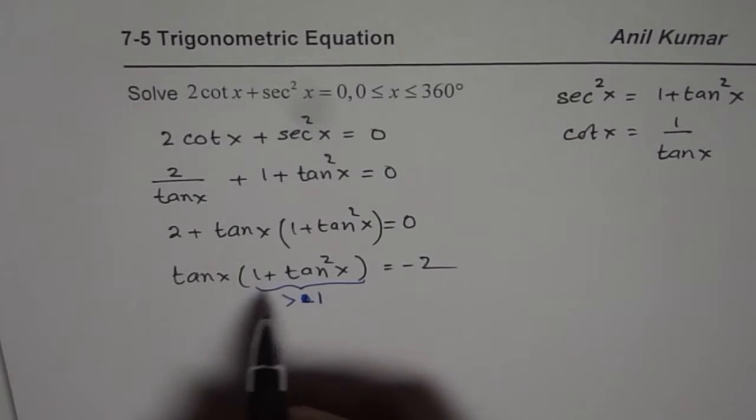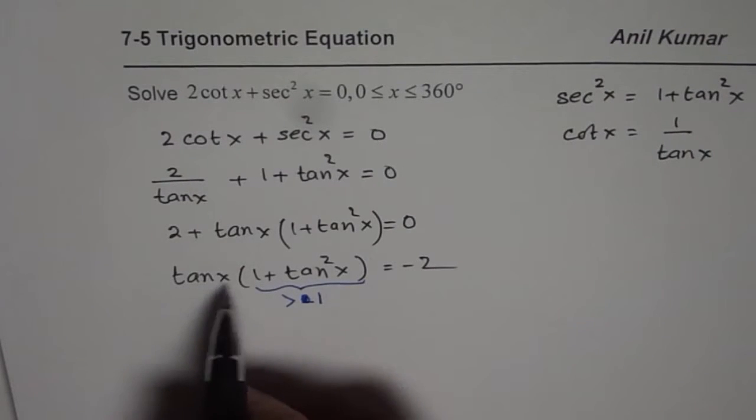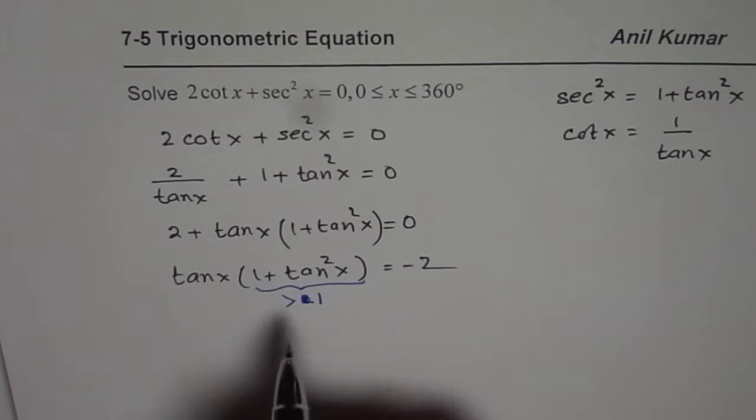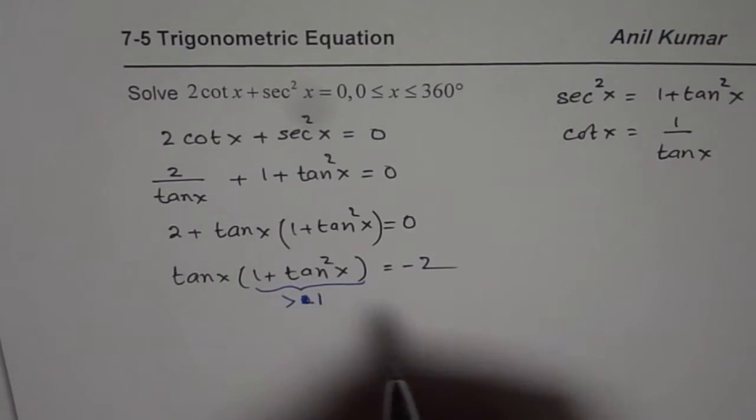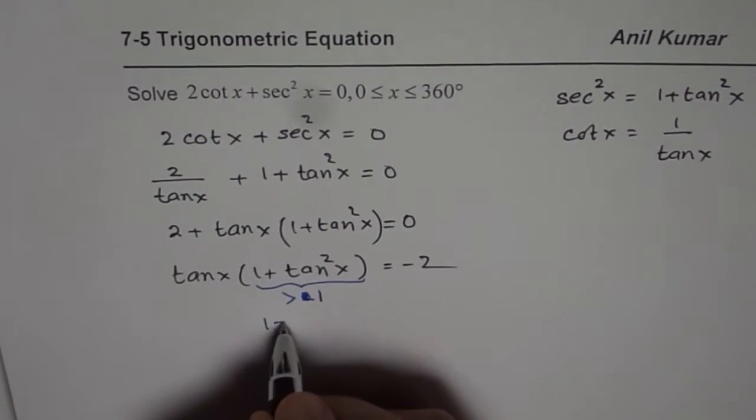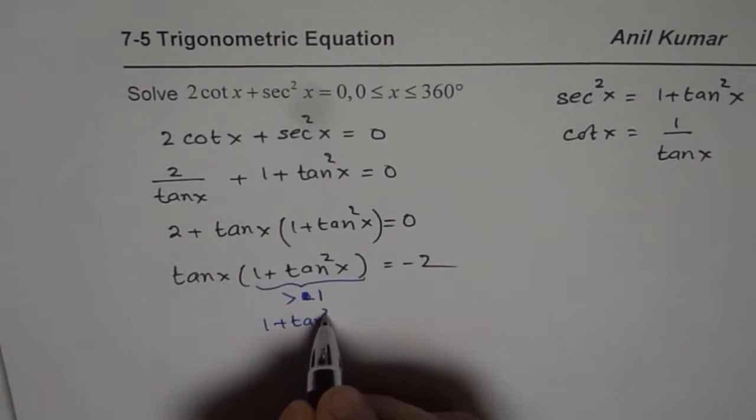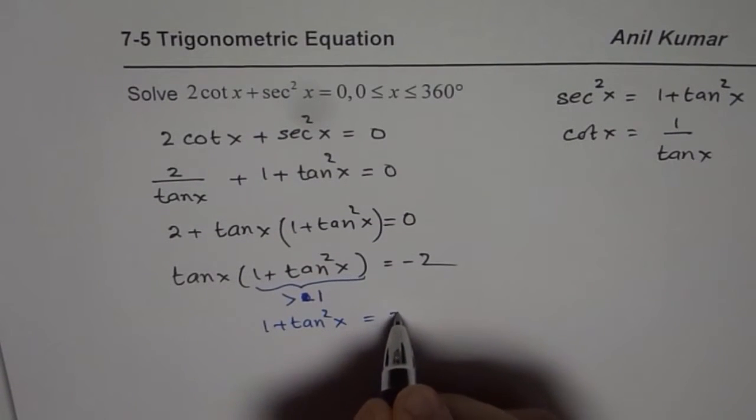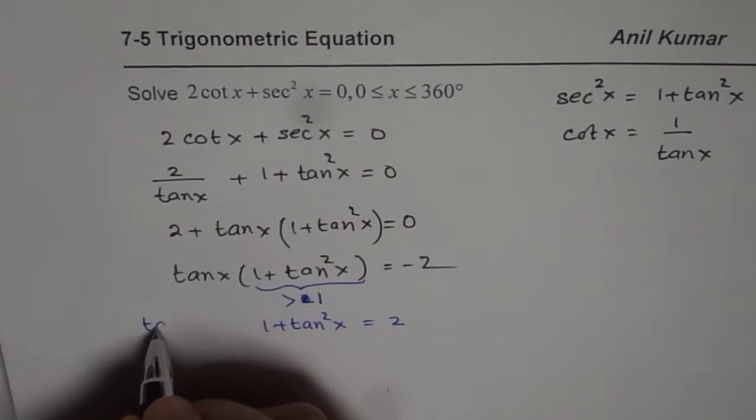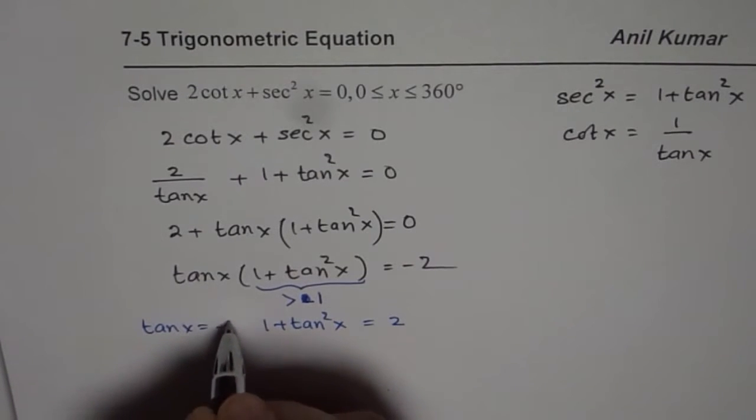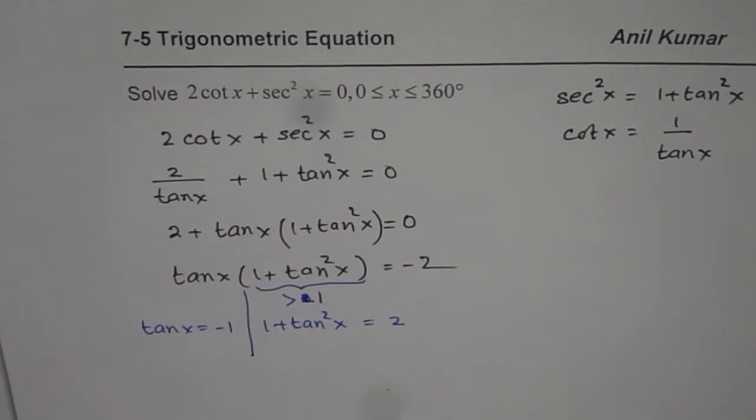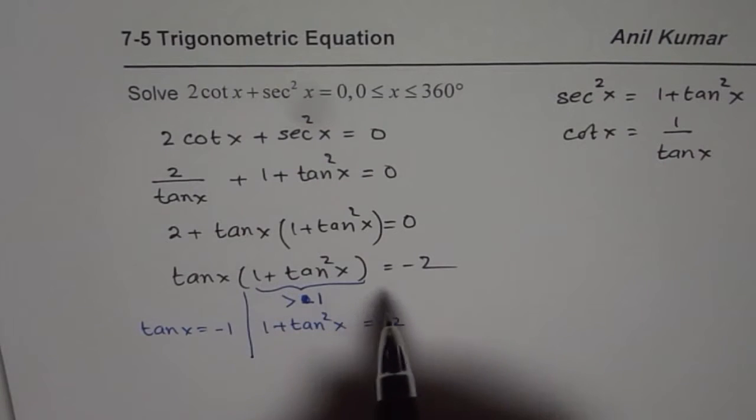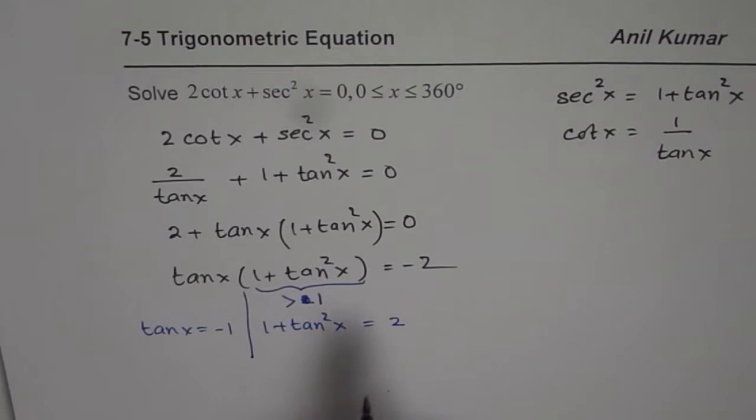Since it is greater than 1 and we are trying to figure out that product of two numbers is minus 2, what we can take this as? We can take 1 plus tan square x as equal to 2 and tan x equals to minus 1. So that could actually give us a solution.